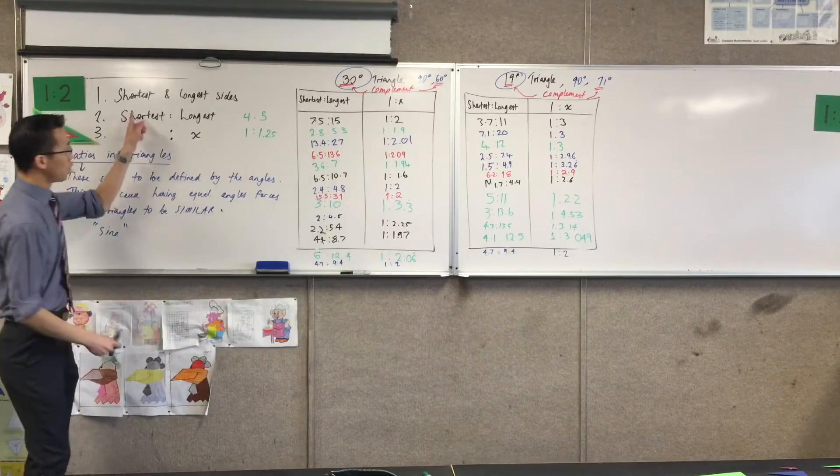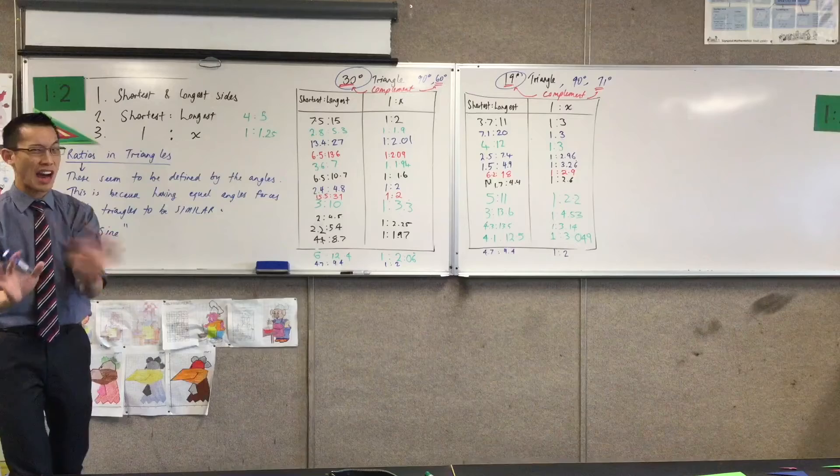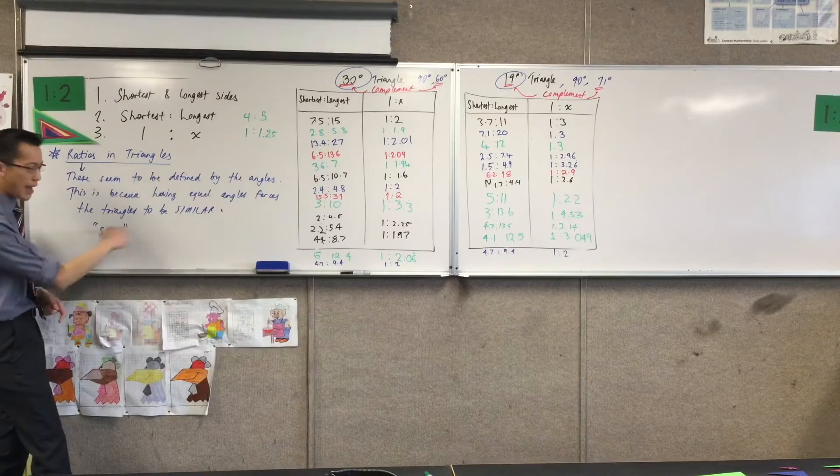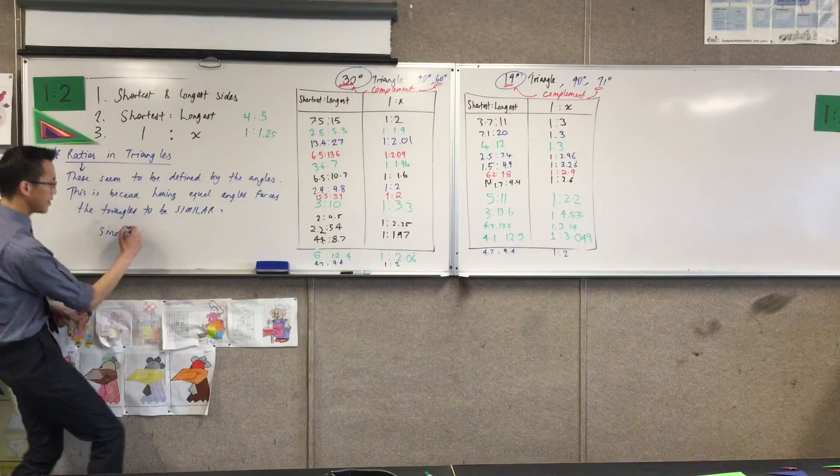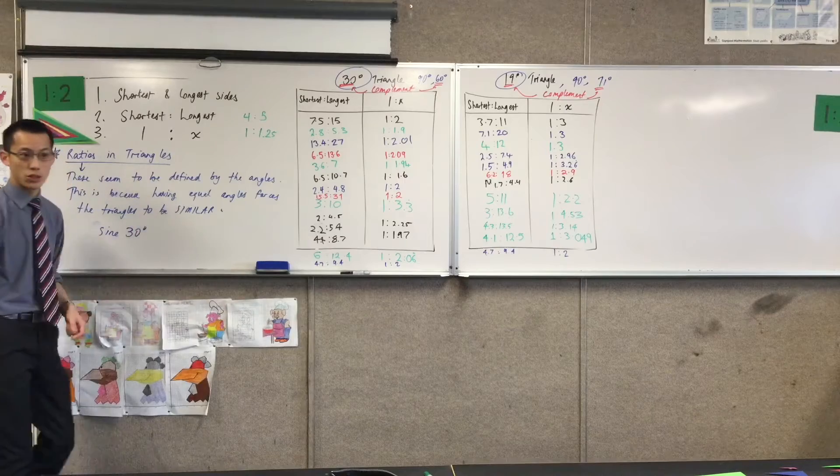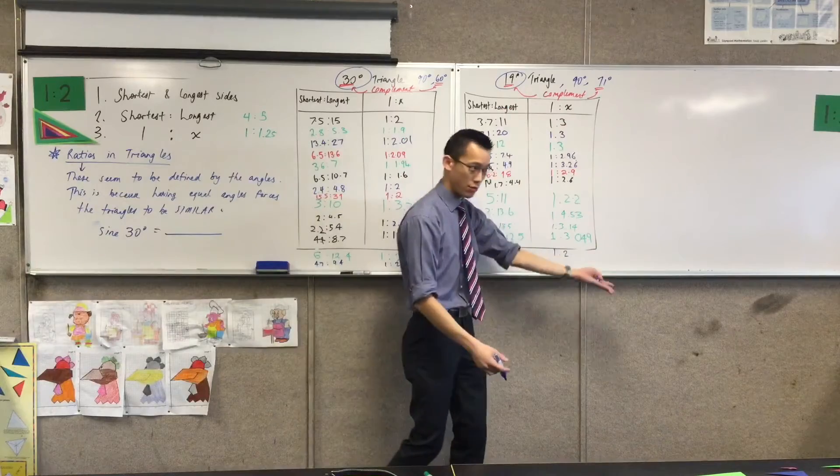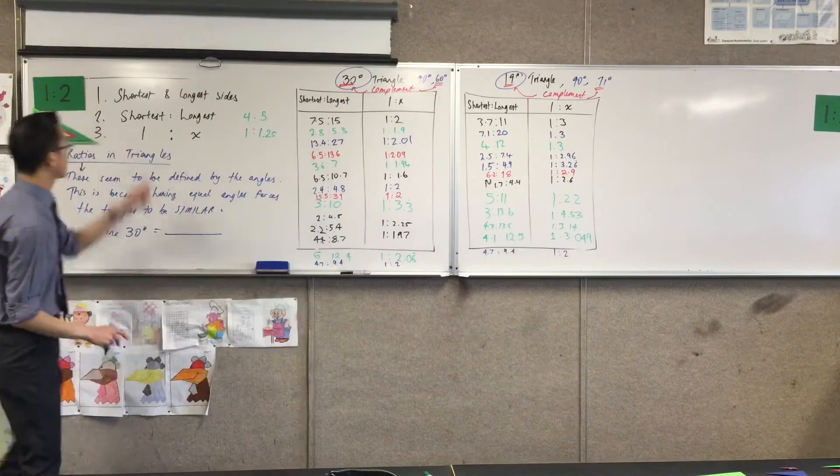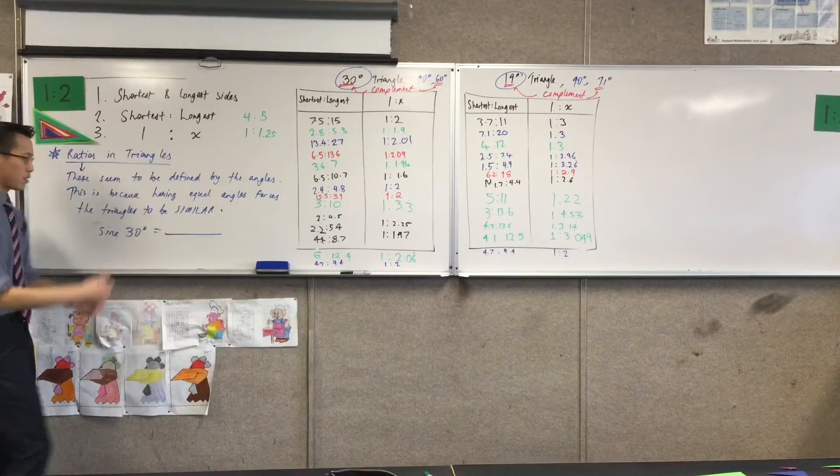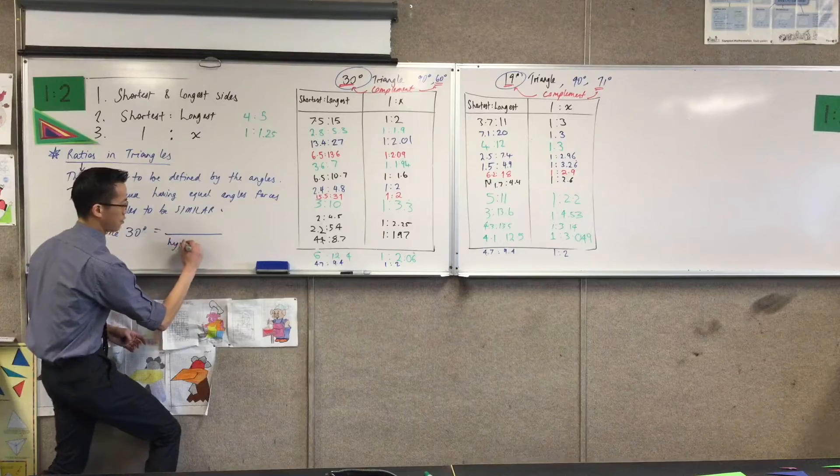Rather than saying shortest and longest because that actually really disguises what's going on, sine of an angle, like 30 degrees, that's the angle you were looking at, what it is, is a ratio. All of these things are ratios between two sides. The shortest and the longest one in our context, the longest one is the hypotenuse.